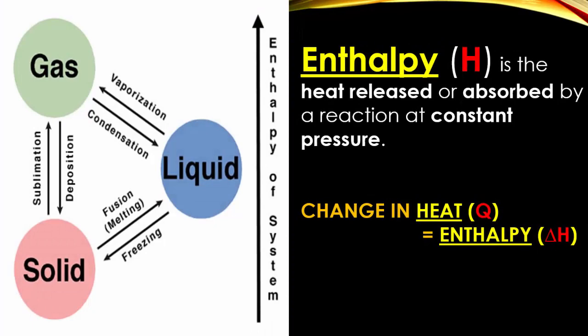Enthalpy, which is represented by an H, is the heat released or absorbed by a reaction at constant pressure. If you're undergoing a phase change, or a chemical reaction, the change in the heat, which we've been calculating thus far as Q, can be symbolized as a delta H. Delta H means a change in heat. Enthalpy means change in heat.